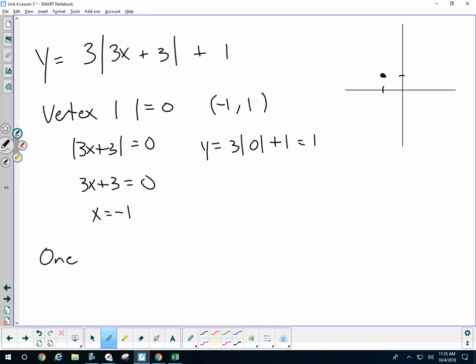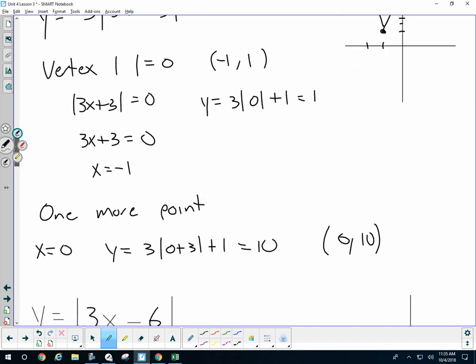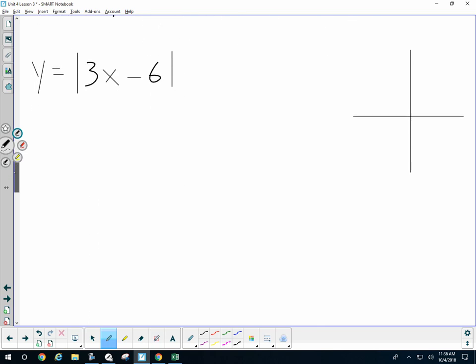All I need is one more point. Knowing that absolute values are symmetrical and have a vertex, knowing that the vertex will occur at the minimum value of something, we're good.